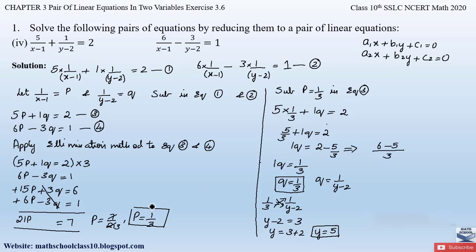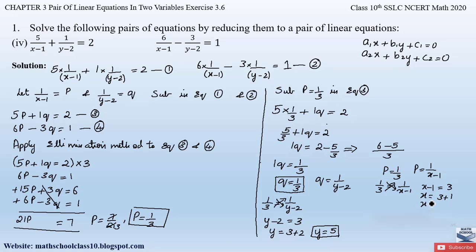Similarly, we obtained p = 1/3, and we had assumed p = 1/(x−1). Equating: 1/3 = 1/(x−1). Cross multiplying: x − 1 = 3. Sending −1 to the right-hand side: x = 3 + 1, therefore x = 4. So we got the solution x = 4 and y = 5 for the given pair of equations. This is how we solve this problem.